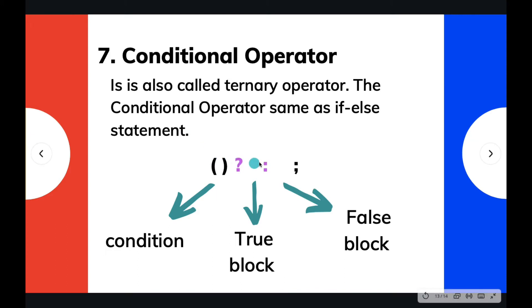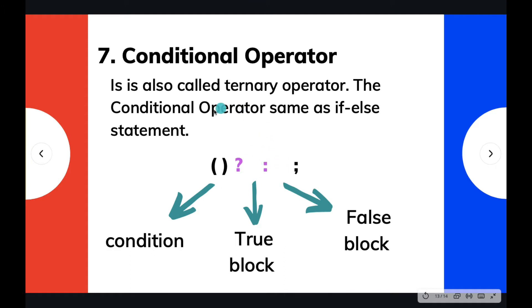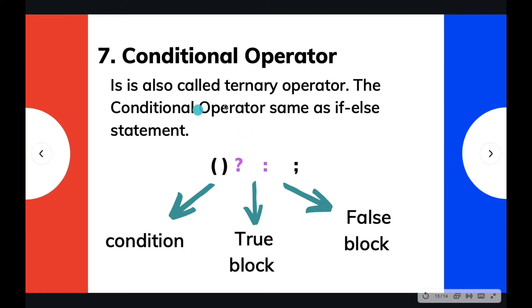The conditional operator is also known as the ternary operator because it requires 3 inputs, or you can say it has 3 sections to be filled. Unlike other operators which are either binary or unary — binary operators require 2 operands to operate on, and unary operators require 1 operand — the conditional operator requires 3 operands.